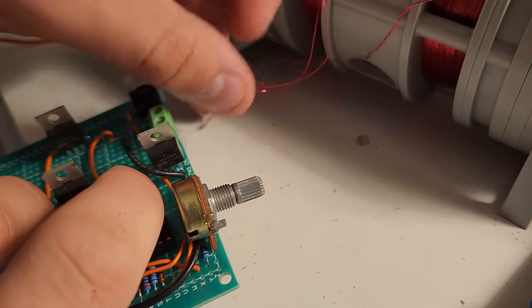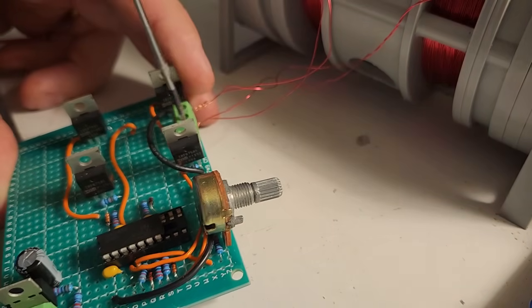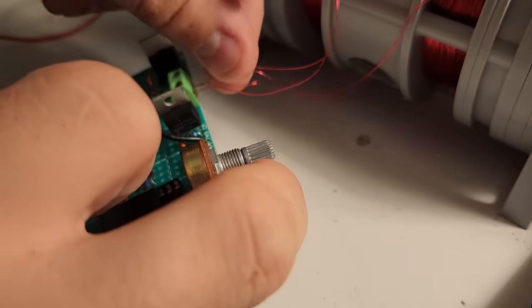Next I built an H-bridge circuit to drive the coils. This has a range of around 15 to 80 hertz that I can sweep through with a potentiometer knob.